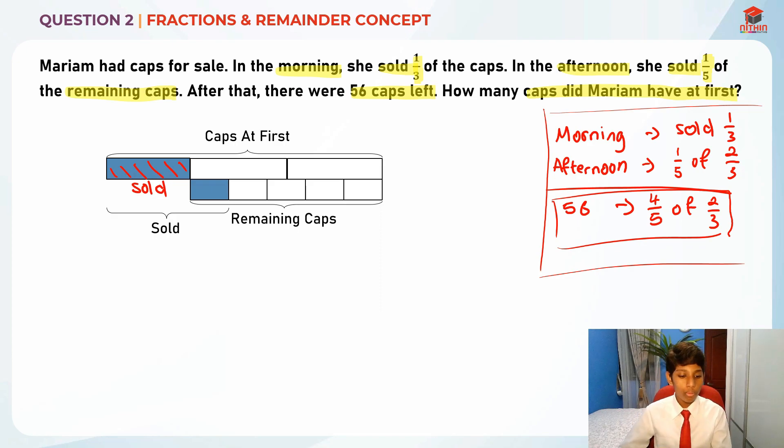One fifth of the remaining caps, so you can see there's one box, two box, three box, four box, five box. So one fifth she actually sold it. This was also sold and I've written down here. Then this is the remaining caps, the five boxes basically meaning two thirds is the remaining caps.